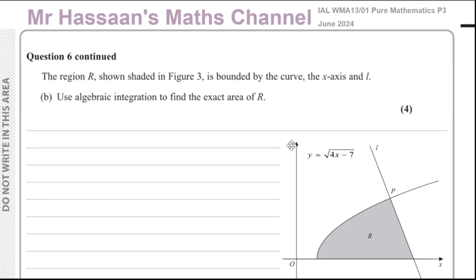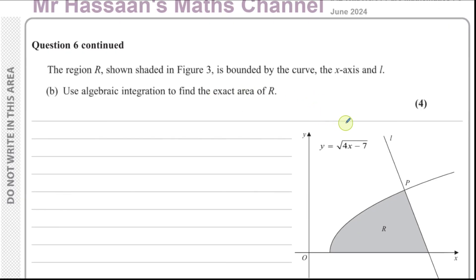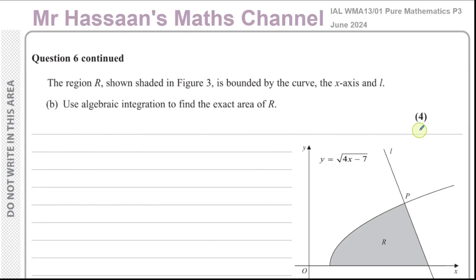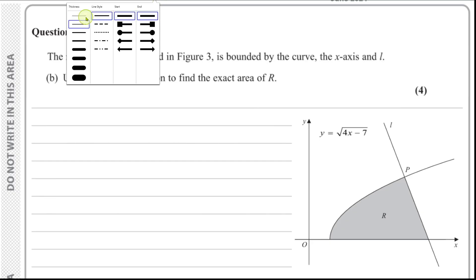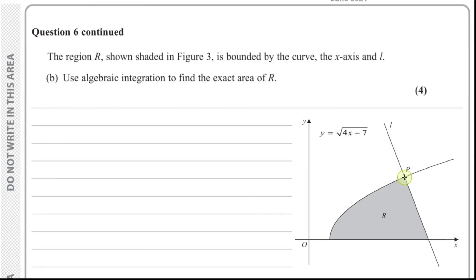So I'm going to continue with this question now. It says the region R shown shaded in figure 3 is bounded by the curve, the x-axis and the line L. We want to use algebraic integration to find the exact area of R. The area of R is made up of two different sections. You have, up to P, the area under this curve, and then you have this triangle.